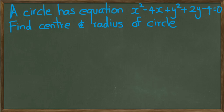You've got a circle that has the equation x squared minus 4x plus y squared plus 2y minus 4 equals 0. Find center and radius of circle.